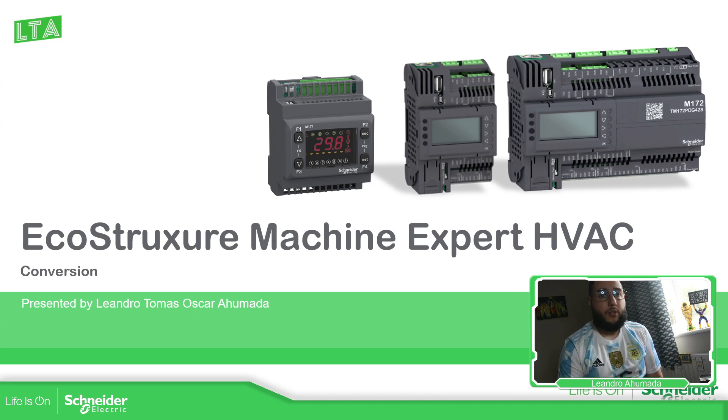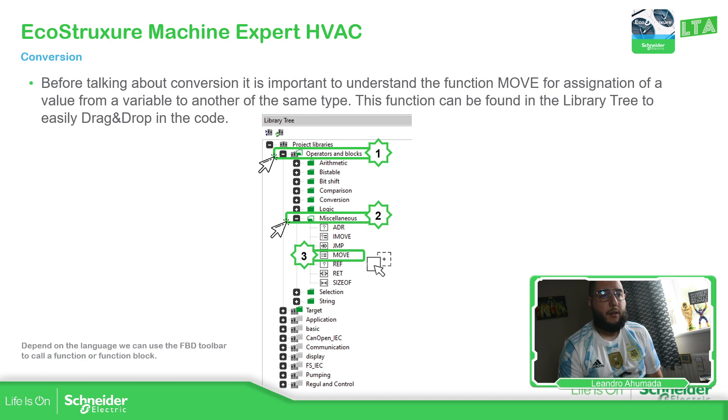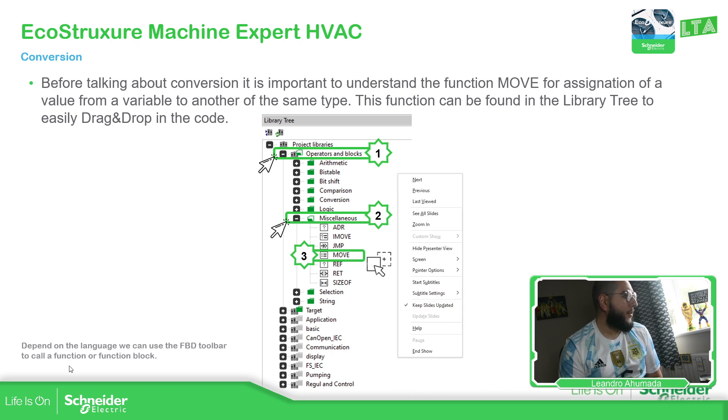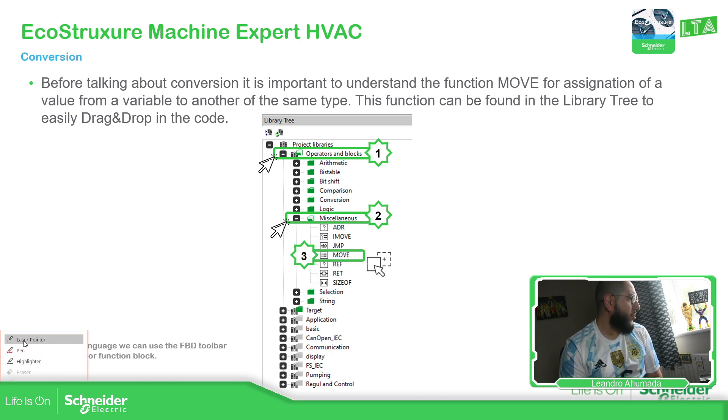So before going to the conversions, I believe it's much better to start with one specific function that we have, which is the move that allows us basically to move one value from a variable to another variable. So in the previous version of the software before version 1.5, we have these operators and blocks in a different window. Now we have everything on the library tree. So if we go to library tree, selection of the operators and blocks, if we go to miscellaneous, we should be able to see this move. And we just drag and drop it into our code in order to use it.